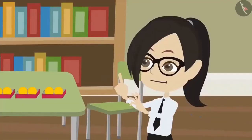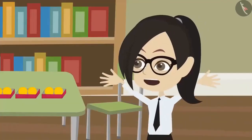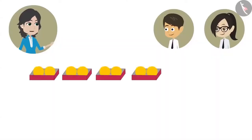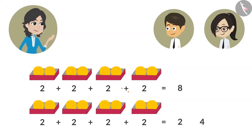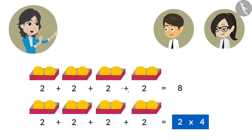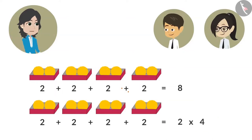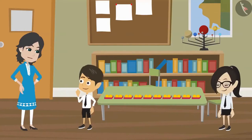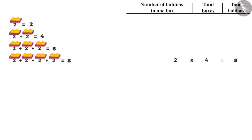But why did you multiply? We are adding them together to find the total number of ladoos. See, Vandana, to know the number of ladoos in four boxes, you have added two four times. Instead of this, you can multiply two by four. Multiplying two four times means adding two four times. That is why both answers are the same, which is eight. That means if you multiply two by ten, will the answer be the same if you add two ten times?